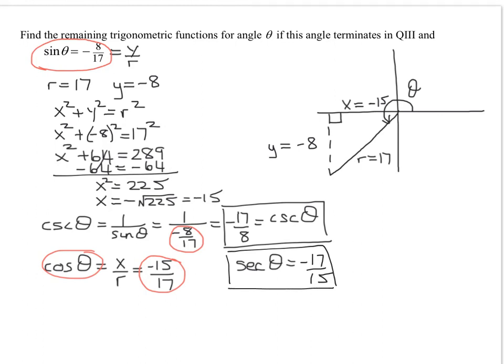And the last two we need to work with, the tangent of theta, is y over x. y is negative 8, x is negative 15. So it's positive 8 fifteenths. And that is the tangent of theta is 8 over 15.